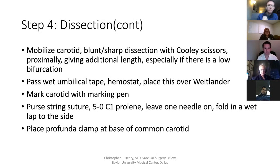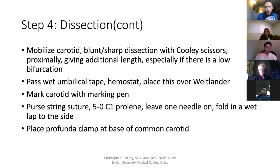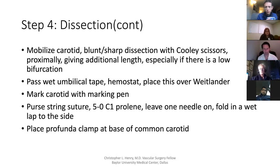Mobilize the carotid — typically using DeBakey forceps and Cooley scissors to spread and snip to mobilize the carotid. You want to get almost down into the chest with your dissection. As you go down on the carotid, you're pulling up, pulling the carotid up into your incision, which gives a little bit of additional length to work with. Once you get it free, circumferentially pass a wet umbilical tape on a hemostat, and then lay that over the Wheatlander in the crotch of the Wheatlander. Mark the carotid with a marking pen, then place the purse string with a 5-0 C-1 needle — a good needle for a small hole that gives a nice bite.